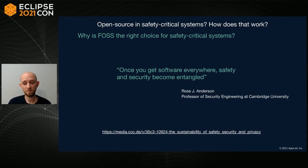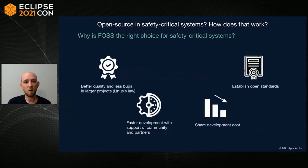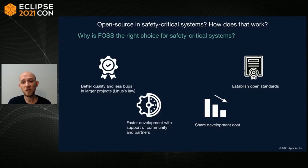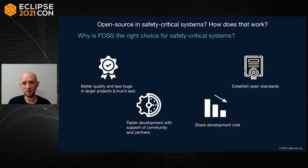Most security engineers today would always choose open source software over closed source software because it tends to be more secure. Open source software in safety-critical systems tends to have better quality and fewer bugs, especially in larger projects — sometimes called Linus's Law: if lots of people look at a piece of code, it tends to have fewer bugs. You also get faster development with community and partner support, can share development costs through industrial partnerships, and if you're lucky, establish open standards.